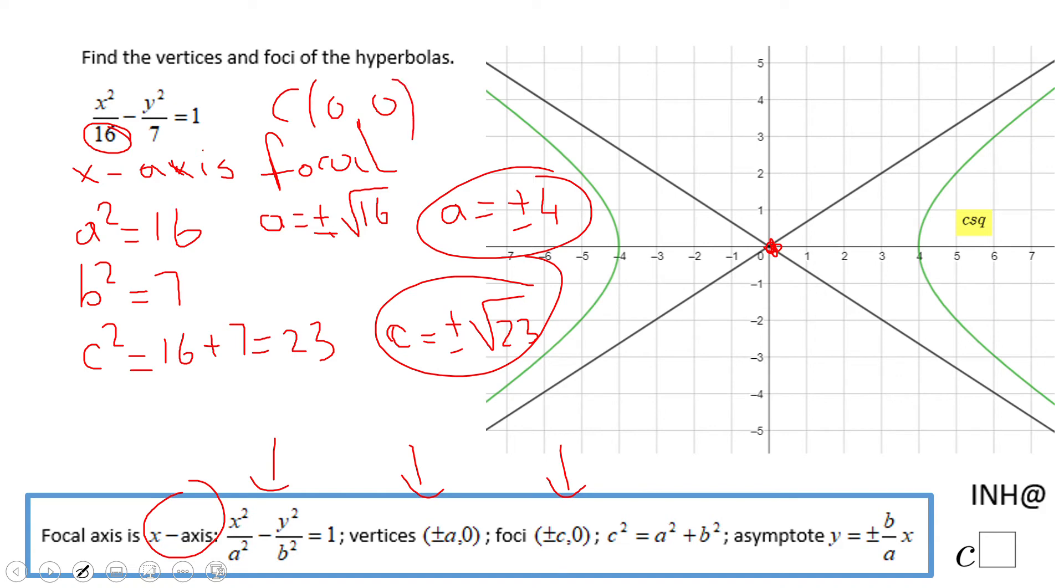Knowing that x-axis is the focal axis, you're going to move four units left and four units right to get the vertices of this hyperbola. Also, you're going to move square root of 23 left and right and you get the foci. That is a graphical approach.